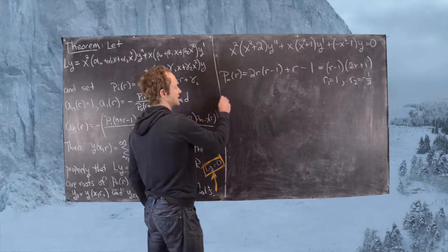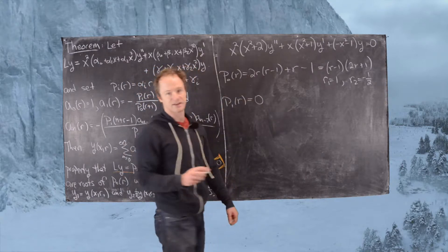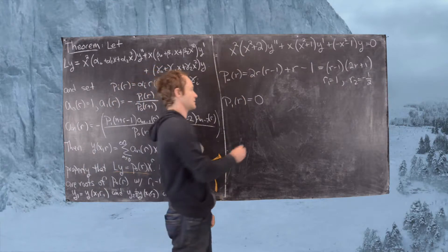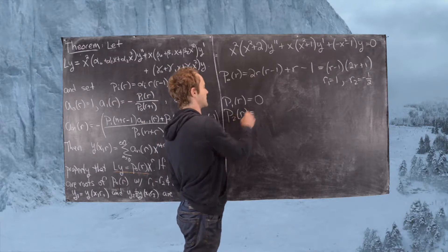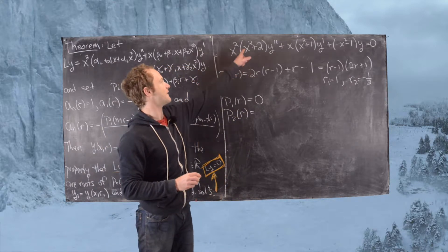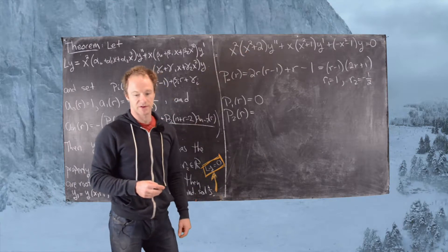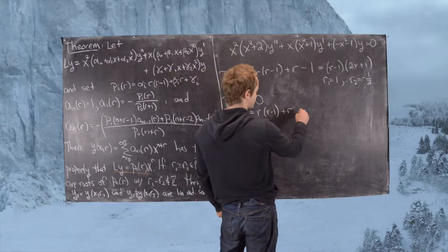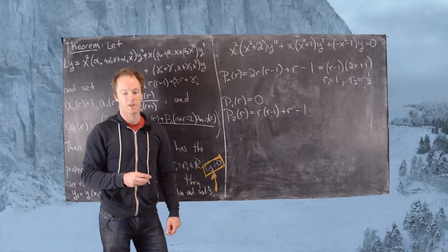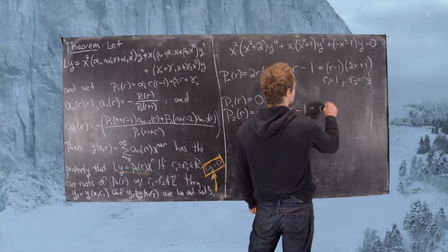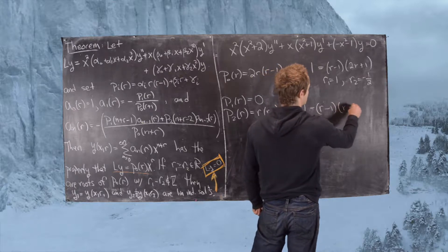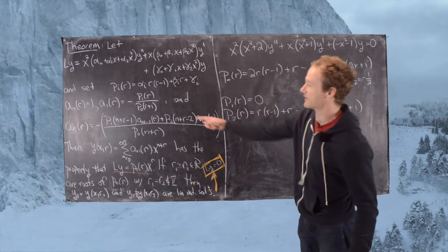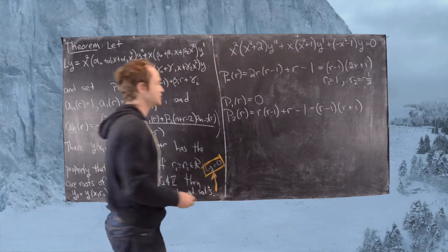Next, P1(R) is clearly zero, because P1 is built off of the linear terms in each of these polynomials, and there are none. Then P2(R) is built off of the quadratic terms, giving us R(R−1) + R − 1, which factors as (R−1)(R+1).